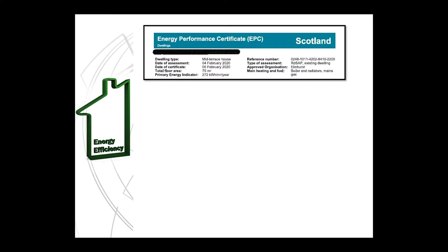Let's look at each element in more detail. The very first thing on display at the top of the cover page is the dwelling information, including the dwelling address, the dwelling type — which could be mid-terrace, semi-detached, detached, bungalow or flat — the date of assessment and the certification date, the total floor area, the annual energy consumption, the unique reference number or RRN of the certificate, the type of assessment (in this case RDSAP), the approved organisation who certify the energy assessor, and the main heating and fuel source.